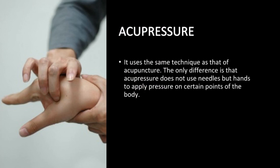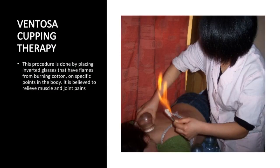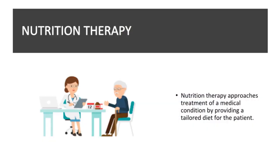Acupressure uses the same technique as acupuncture. The only difference is that acupressure does not use needles, but hands to apply pressure on certain points of the body. Reflexology, similar to acupuncture, focuses on treating specific disorders through massaging of the soles of the feet. Cupping therapy is done by placing inverted glasses with flames from burning cotton on specific points in the body; it is believed to relieve muscle and joint pains.